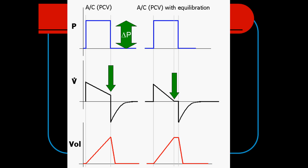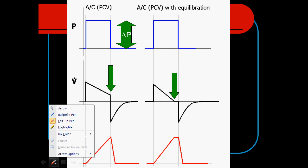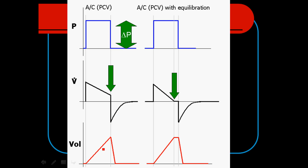Looking at this diagram: the first thing that happens is the ventilator is triggered — either time triggered or patient triggered. The pressure builds up in the circuit very quickly. We can use a ramp to slow that slightly. The pressure is then held for a period of time depending on our TI — that's our limit; it is pressure limited. After the set time is held, we cycle into exhalation. Our cycle is always time.